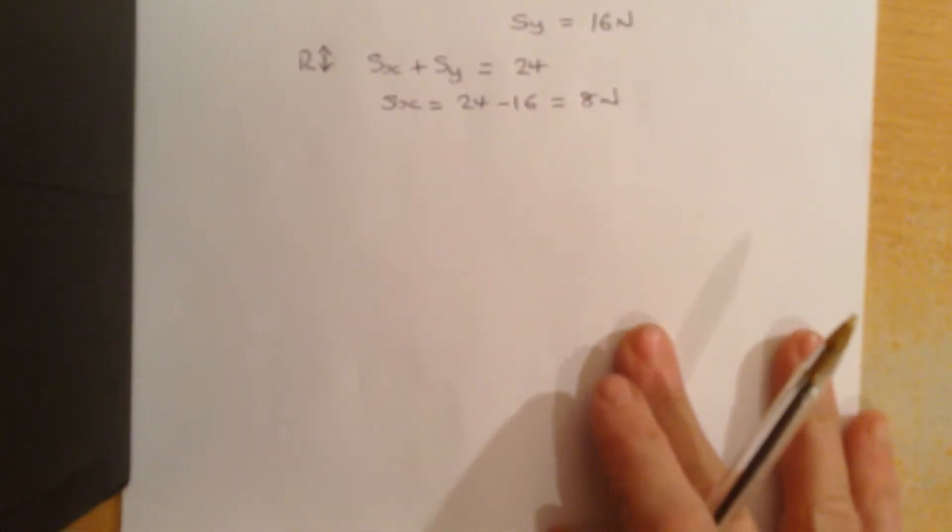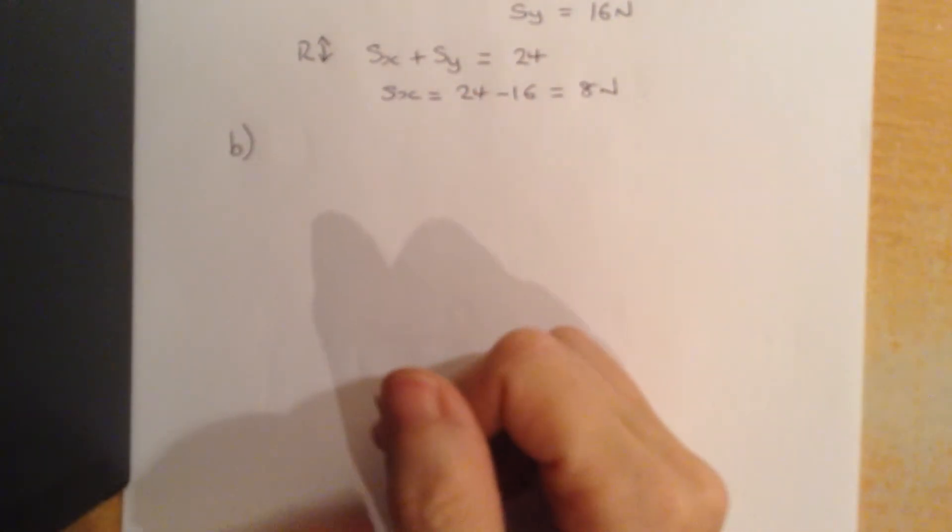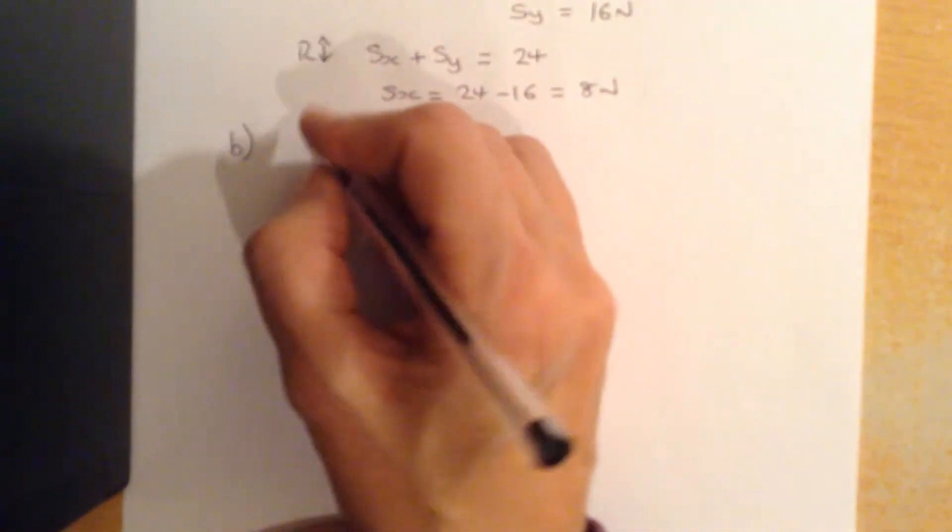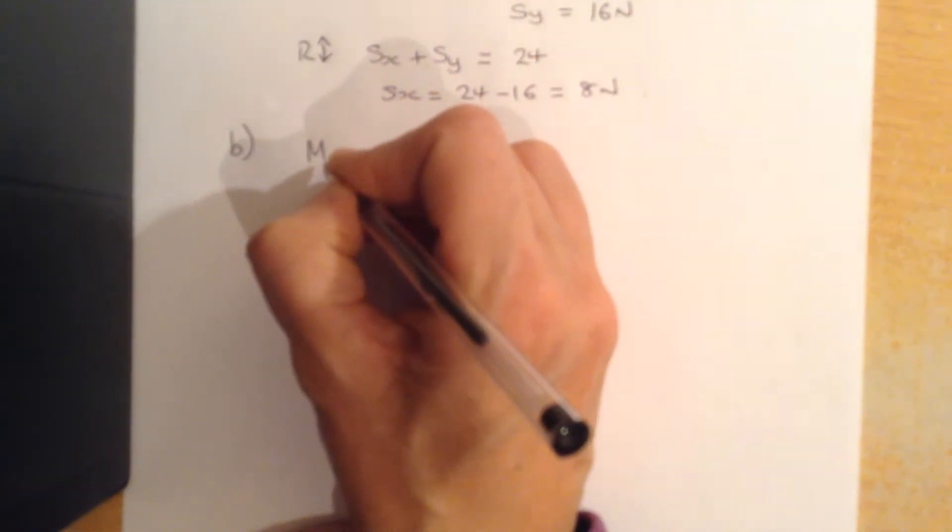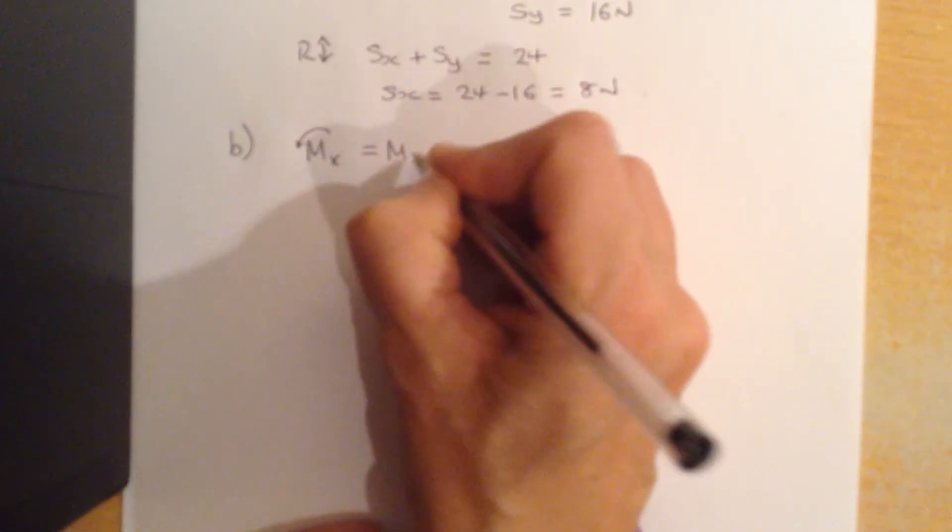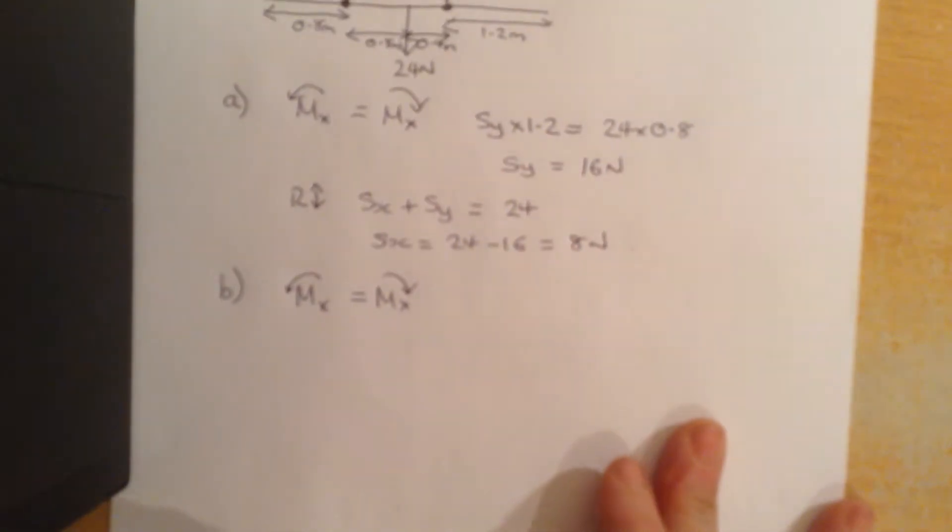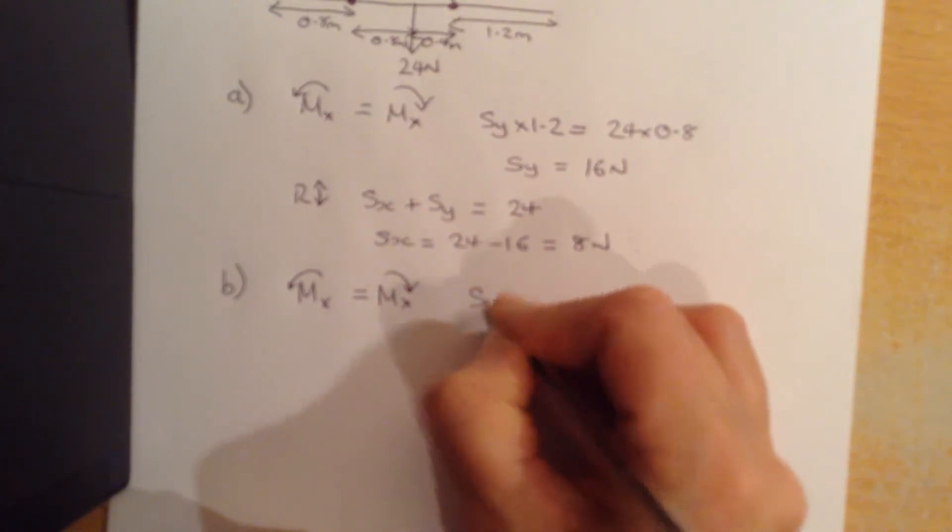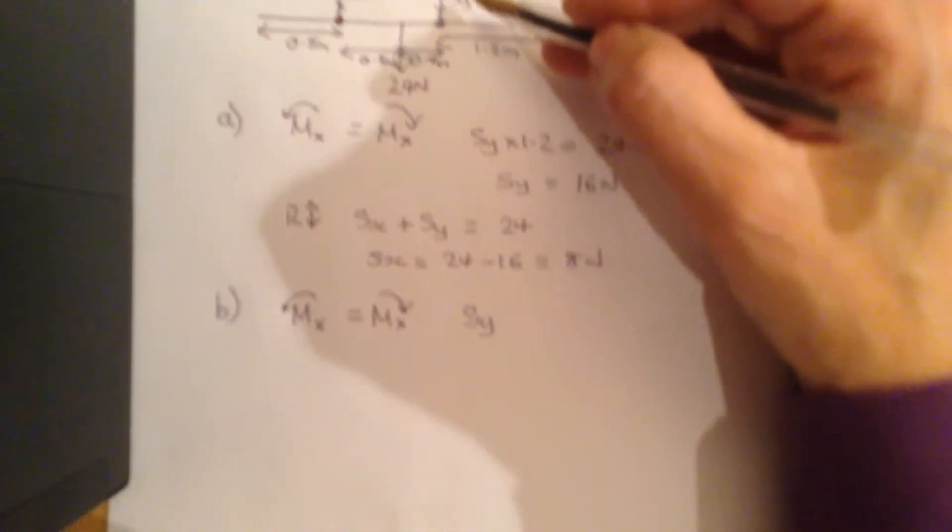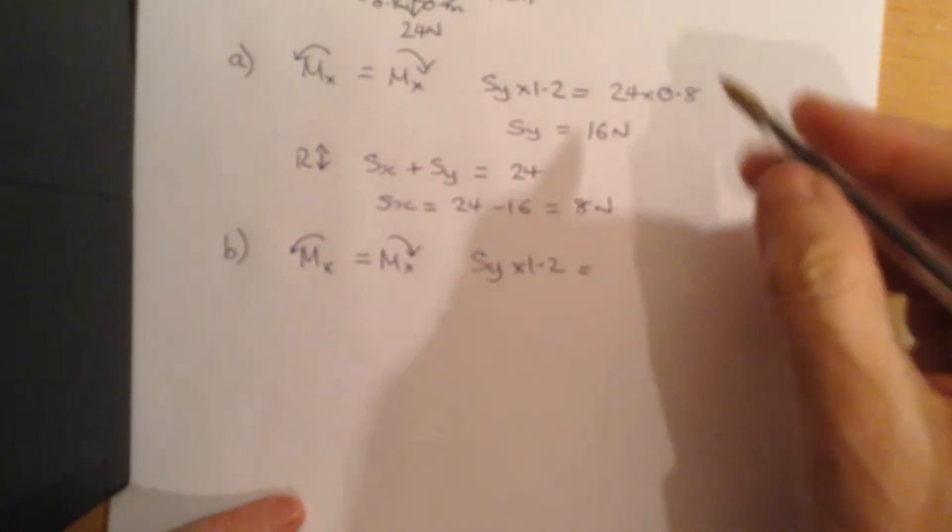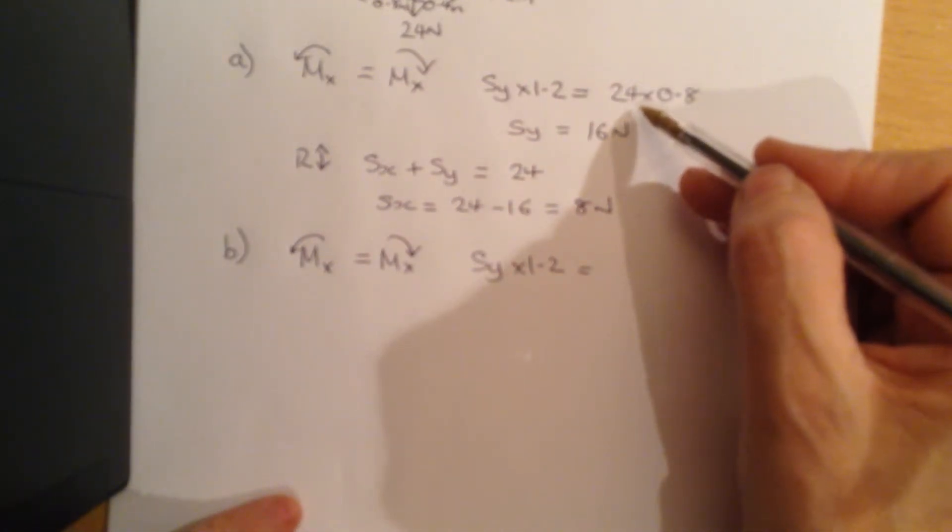So part B. Now pretty much the same, but what we've got, so it's an additional 90. So we're going to take moments to start with just like we did before. So just like we did here, we're going to take moments, so SY, the clockwise moment here, multiply by 1.2 hasn't moved, is now instead of